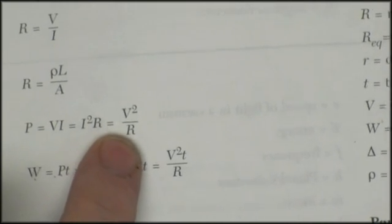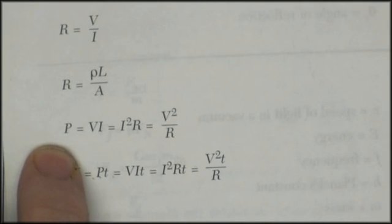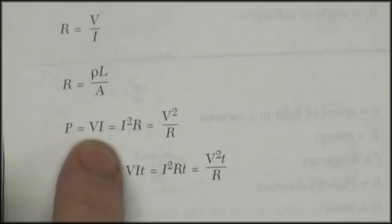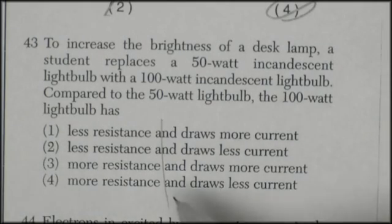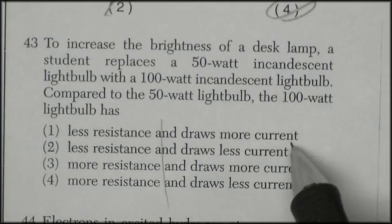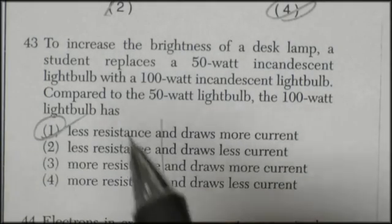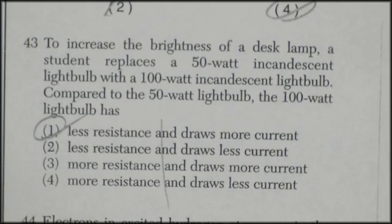And less resistance would have a positive effect on power. But more power means more current drawn. So it's going to be less resistance and more current. I'm going to say the answer to 43 is 1.